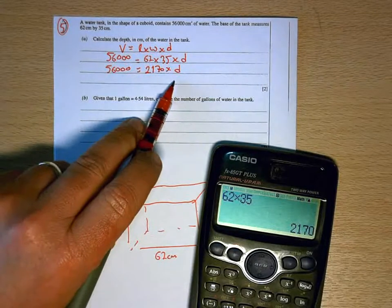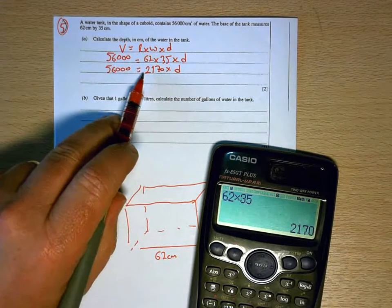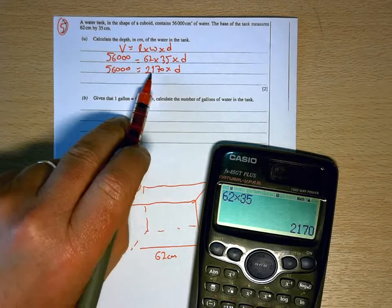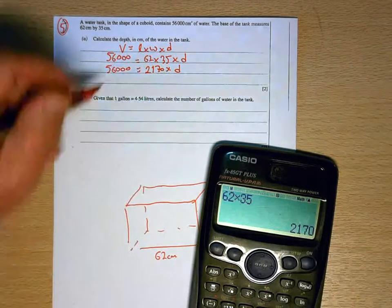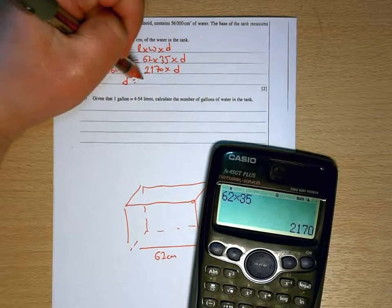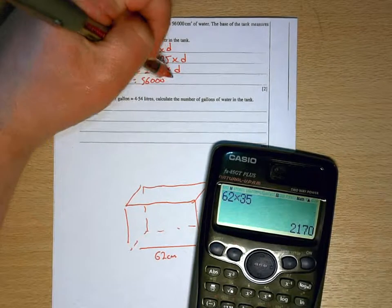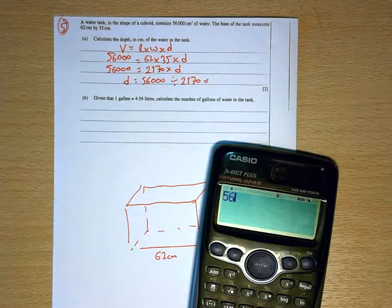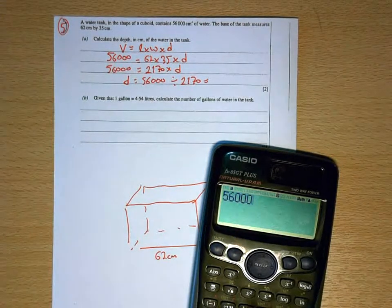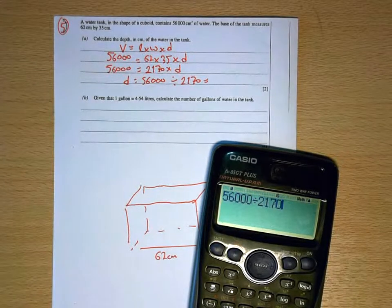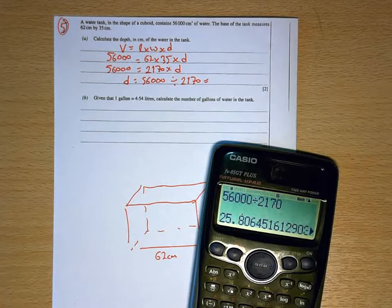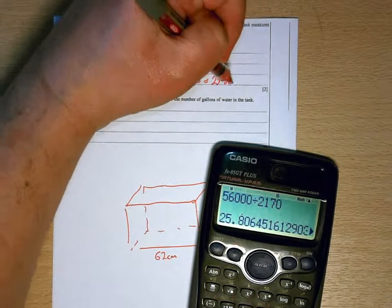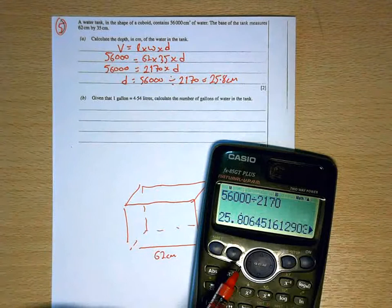So what we're forming here is an equation. We can work out what 62 times 35 is, which is 2,170 times d. So in order to get the d on its own, which is what we want to find, I have to undo the times 2,170. The opposite of timesing by that value would be to divide by that value. So d would be 56,000 divided by 2,170, which is 25.8 centimeters of water. So we just round that off to one decimal place.